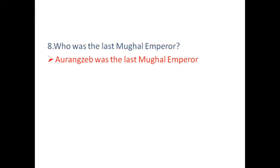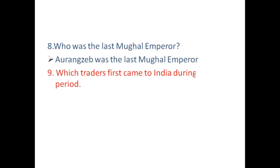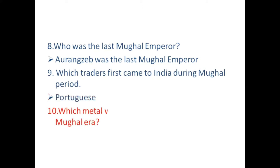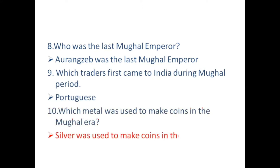Who was the last Mughal Emperor? Which trader first came to India during the Mughal period? Which metal was used to make coins in the reign of Mohammed Akbar? Silver was used to make coins in the reign of Mohammed Akbar.